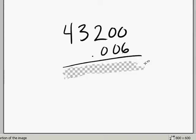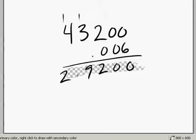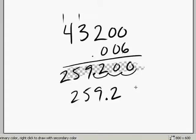All right. So 6 times 0 is 0, 6 times 2 is 12. Carry the 1. Now we're going to move over our decimal three places. 1, 2, 3 and that is going to give us 259.2 minutes.